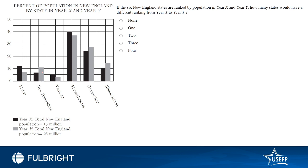The total population is 15 million in year X and 25 million in year Y. The question asks: if the six New England states are ranked by population in year X and year Y, how many states would have a different ranking from year X to year Y? Pause this video and try to solve this question.